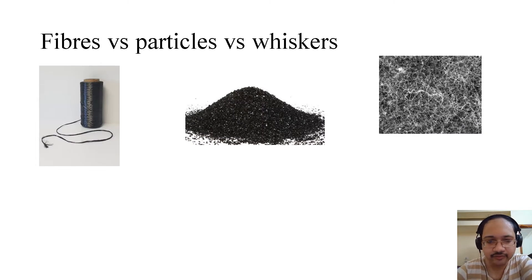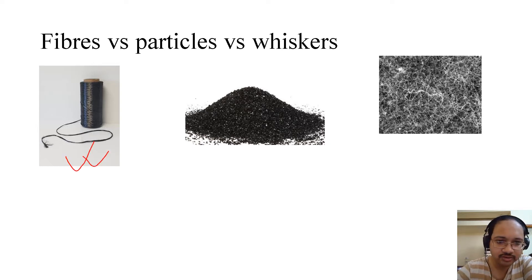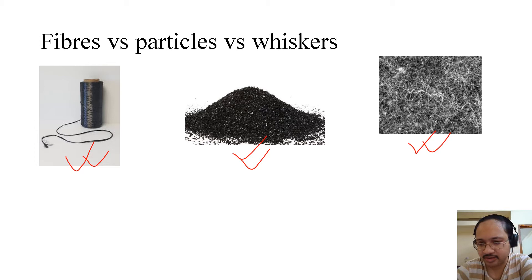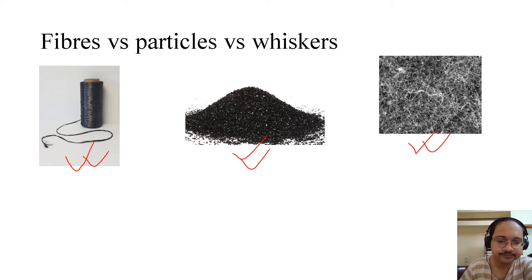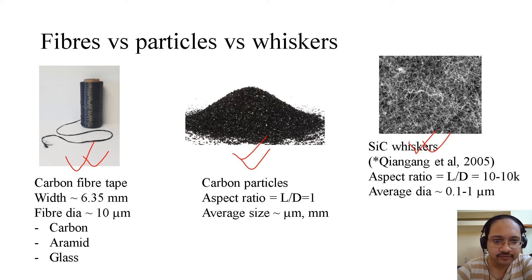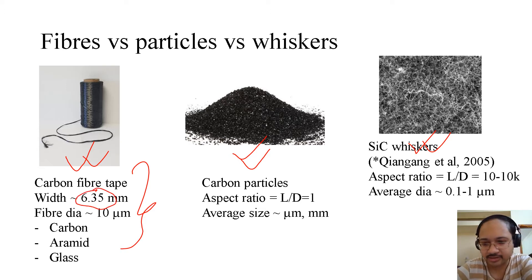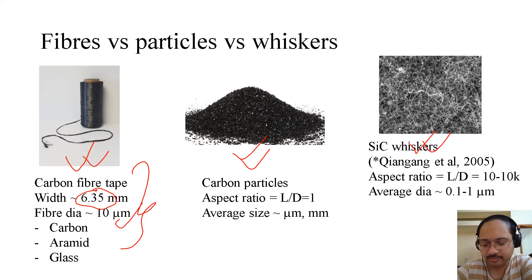Before we discuss, if we closely observe these three figures, what do we see? The first is some kind of a roll of fiber, the second is material in powder form, and the third is whiskers, which are like threads but not as long as fibers. The first one is a carbon fiber tape with a width of 6.35 millimeters, that is a quarter inch, and fiber diameter is about 10 microns.